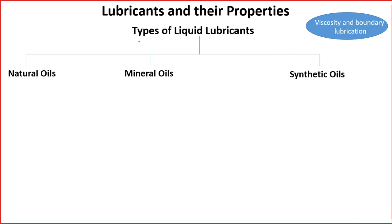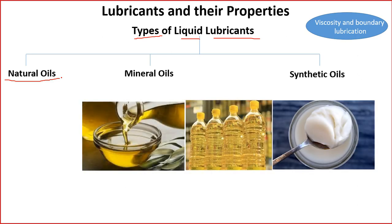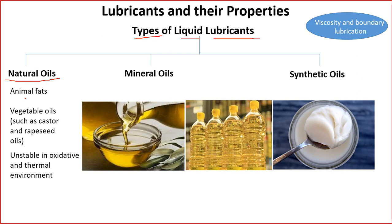Now let us talk about the types of liquid lubricants. The very first type is natural oils — specifically vegetable oils and animal fats. For many thousands of years, humans have used these natural oils as lubricating material.